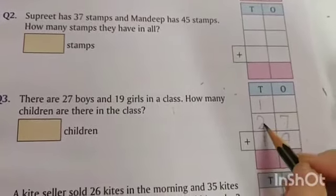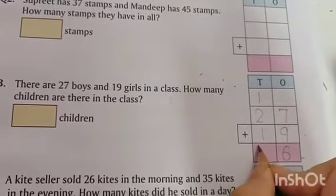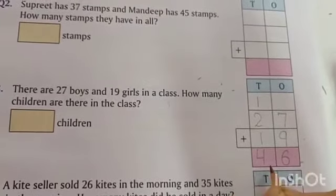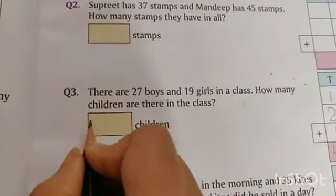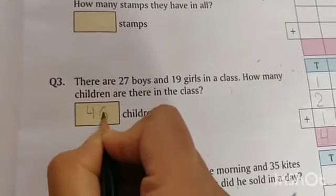So 1 carry to tens and 6 we write here. And in tens column, 1, 2, and 1. 1 plus 2, add with your fingers, is 3. And 3 plus 1 is 4. The sum is 46. So there are total 46 children in the class.